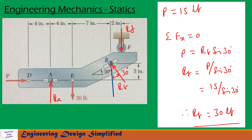Now let us take forces along the horizontal and write sigma Fx equals 0. P is acting towards the right and the horizontal component of R_B acts towards the left, so P equals R_B times sine 30. From this, R_B equals P divided by sine 30. Since P equals 15 LB, substituting and simplifying gives R_B equal to 30 LB.